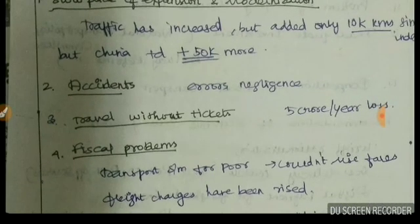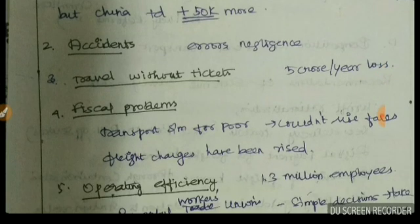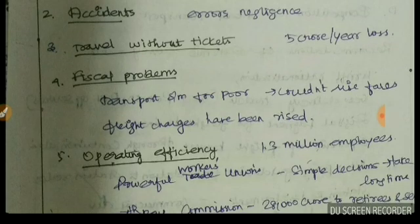Second, accidents — caused by errors and negligence among railway workers and employees. Third, ticketless travel: per year, railways lose 5 crore rupees because of passengers traveling without tickets.